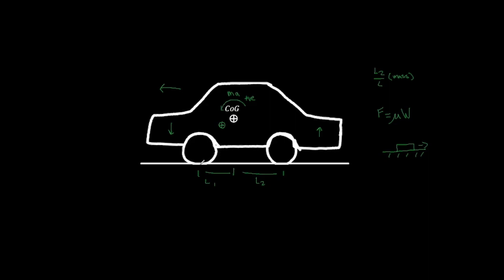Due to this friction equation, the amount of weight we have is directly proportional to both the grip and the braking. When we brake, we'll be braking harder on the front axle as we shift the load to the front — a lot more weight is coming down there. There's a lot more potential for braking force there. More braking force means more heat, and that's one of the reasons why we have larger rotors on the front axle than on the rear.